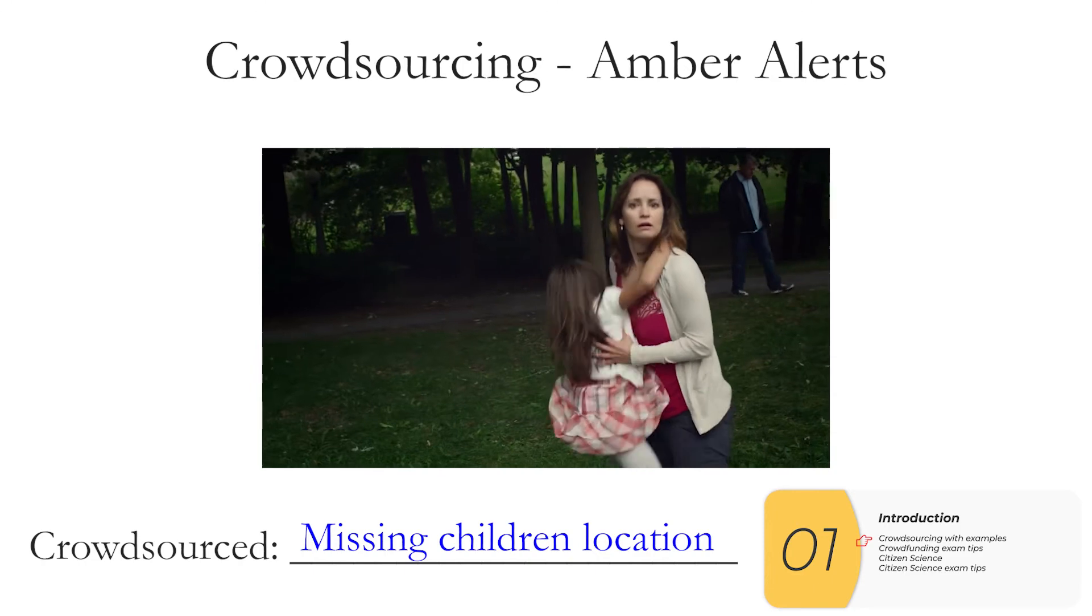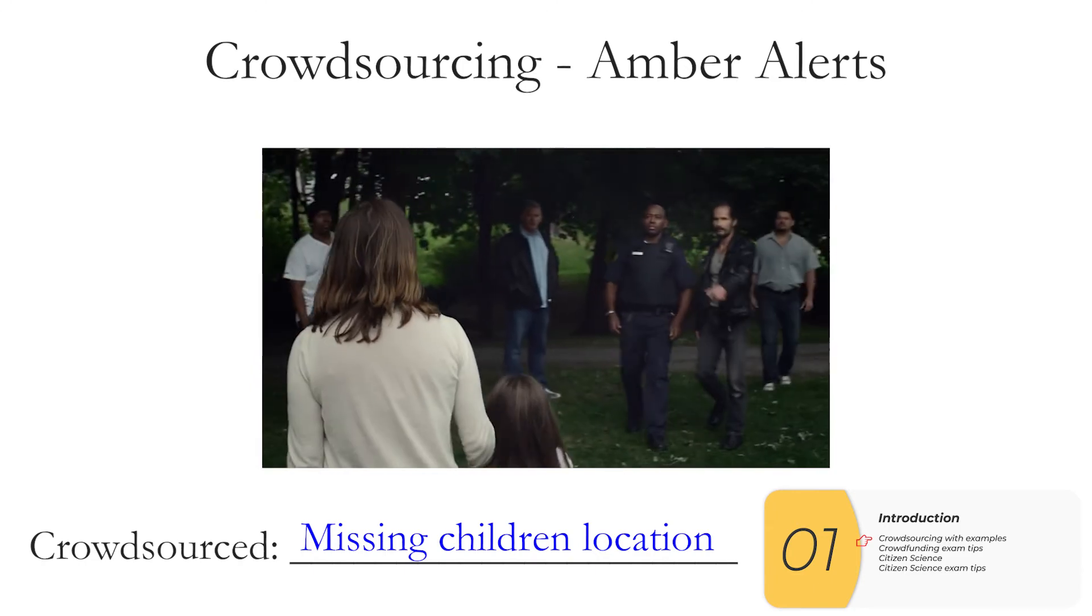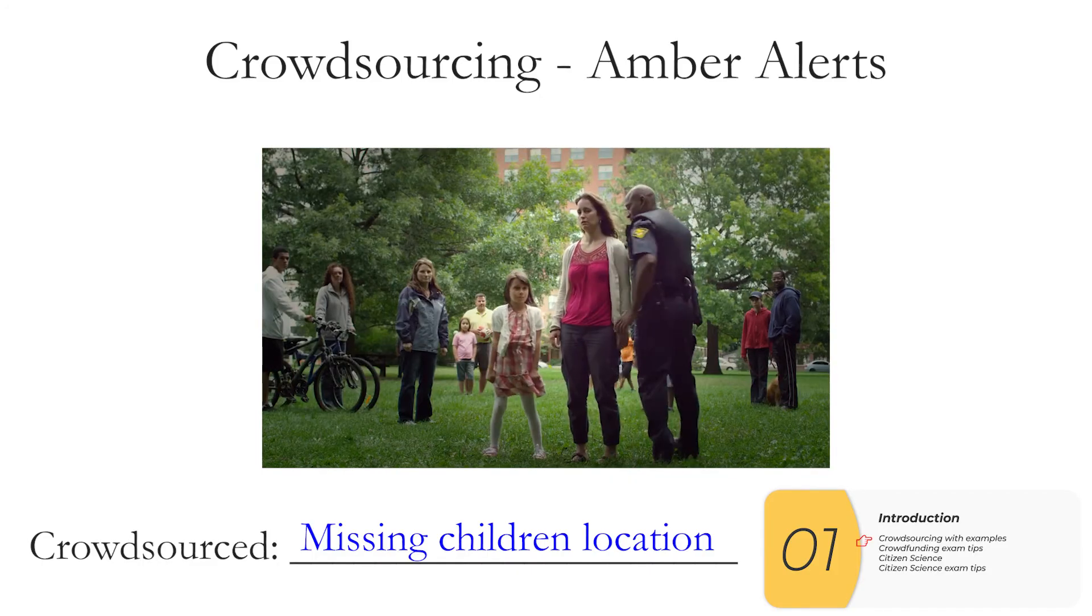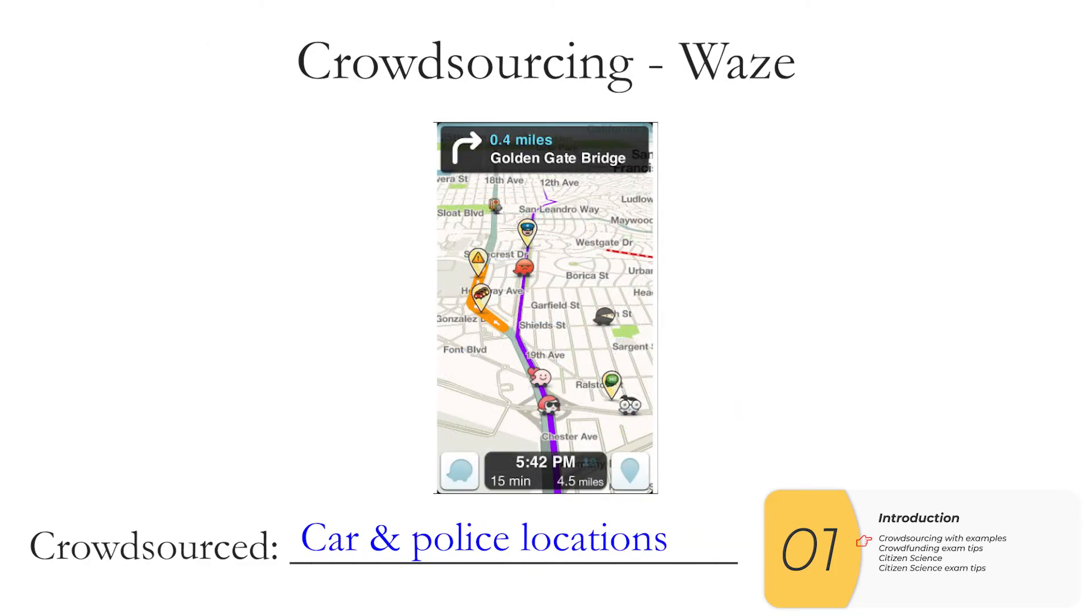Crowdsourcing can take many forms. One famous example is the Amber Alert, where the location of missing children is what's crowdsourced. This is an ad from Canada for the Amber Alert, which really forces you to think about some of the stereotypes you might have. Uber is crowdsourcing, where we are crowdsourcing drivers. Waze is another example, where we are crowdsourcing car and police locations, as well as information about accidents.